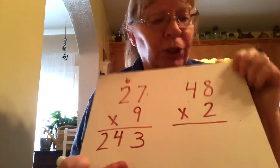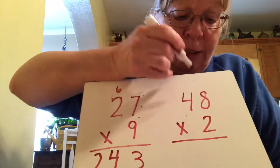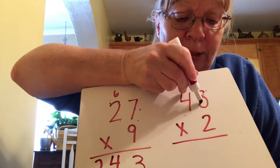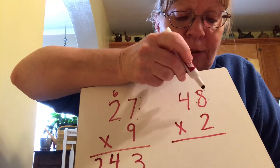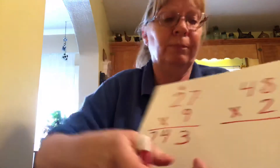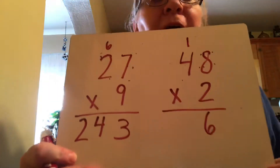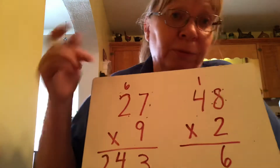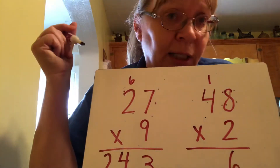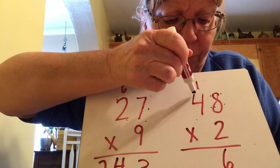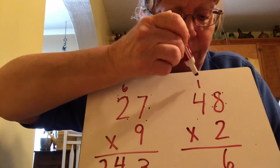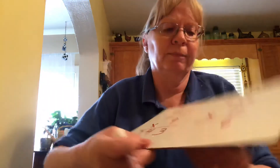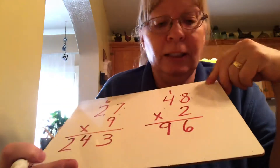The last problem is 48 times 2. First, 2 times 8: 2, 4, 6, 8, 10, 12, 14, 16 — the 6 goes down here and we carry the 1. What I'm doing is just touching the touch points as I count. Then 2 times 4: 2, 4, 6, 8, plus 1 makes 9. So 48 times 2 is 96.